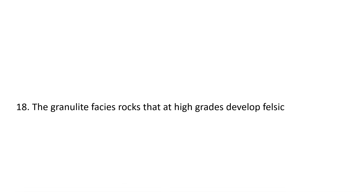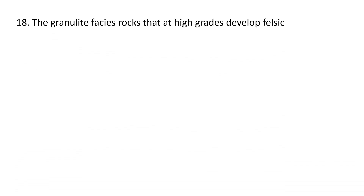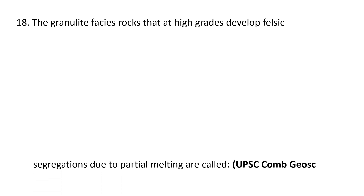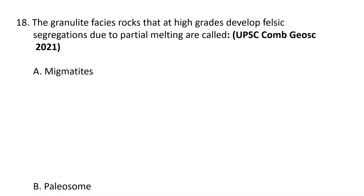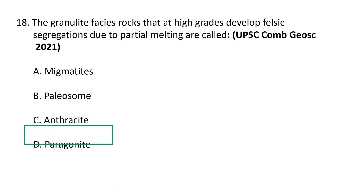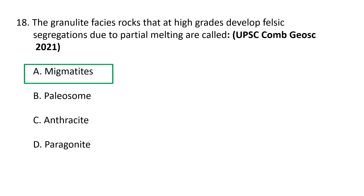Question 18: Granulite facies rocks that at high grades develop felsic segregations due to partial melting are called: (a) migmatites, (b) paleosome, (c) anthracite, or (d) paragonite. The correct option is A — migmatites. Migmatite is a metamorphic rock formed by anatexis; it is generally heterogeneous and preserves evidence of partial melting at microscopic to macroscopic scale. Migmatites represent the transition from metamorphic to igneous rocks in the rock cycle.